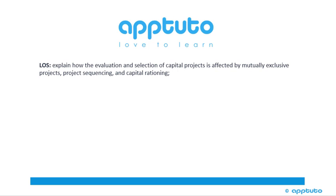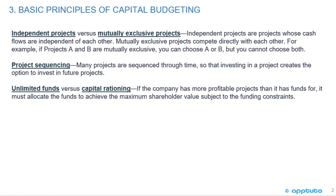This LOS explains how the evaluation and selection of capital projects is affected by mutually exclusive projects, project sequencing, and capital rationing. Continuing with basics of capital budgeting, there's only one slide for this LOS, and we're just looking at some definitions that are important to understand and remember.